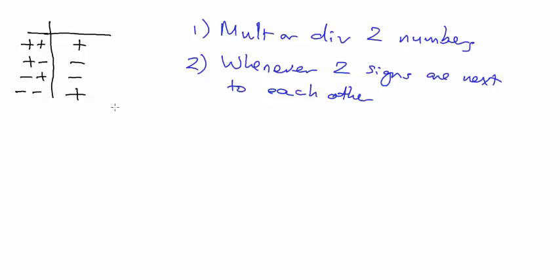Say you're trying to multiply two numbers. Two times three - you've got to know that whenever you multiply or divide two numbers, that's when the table comes into effect. Two times three is really plus two times plus three. You've got two positives, so the answer is positive. Then just do two times three which is six.